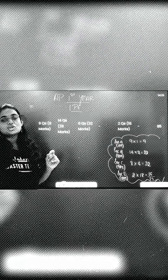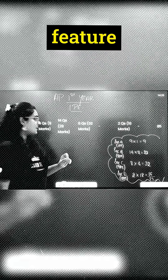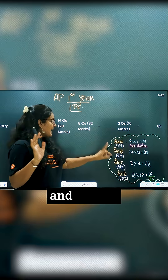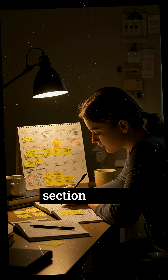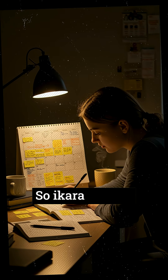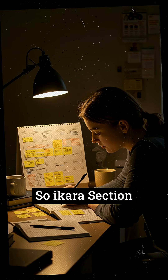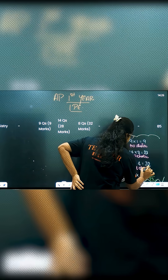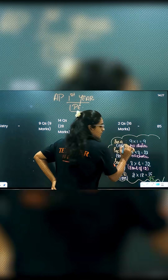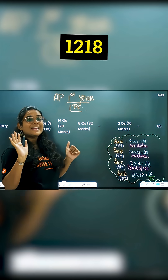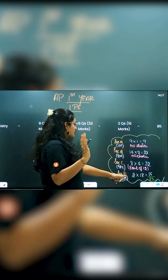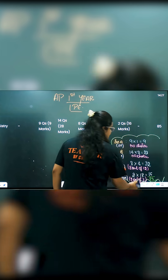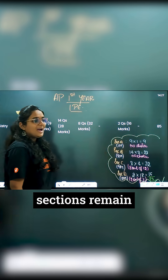So what are the choices for these questions? Section A — no choice. Section B — no choice. In Section C, 8 out of 12. There are 12 questions total. In Section D, we can attempt 2 out of 3. Same as TS, it remains as it is.